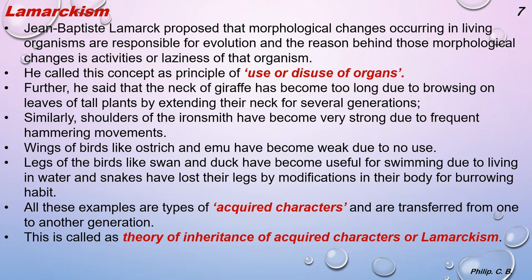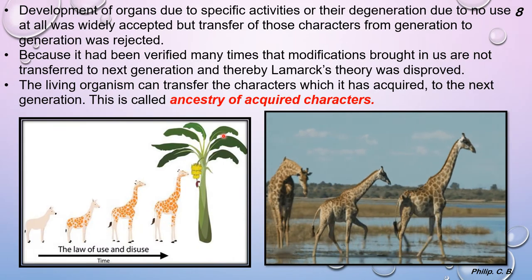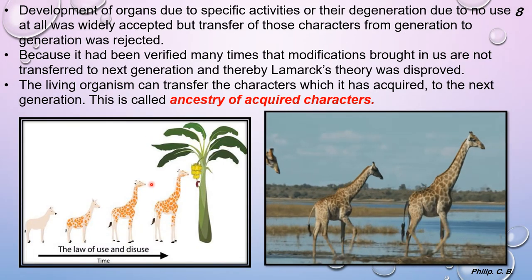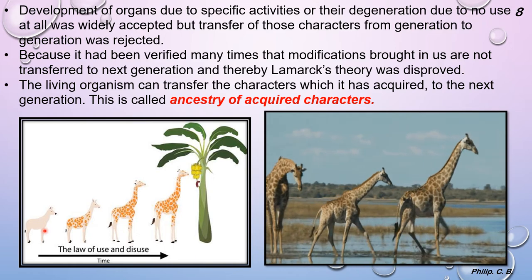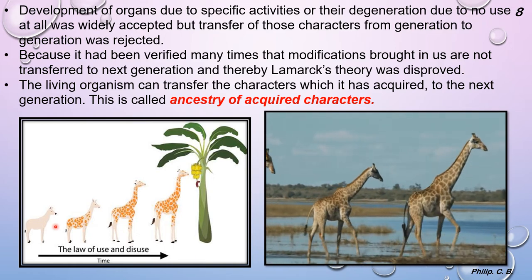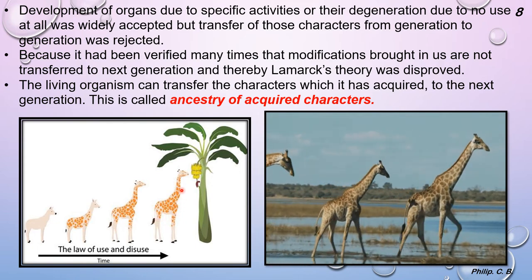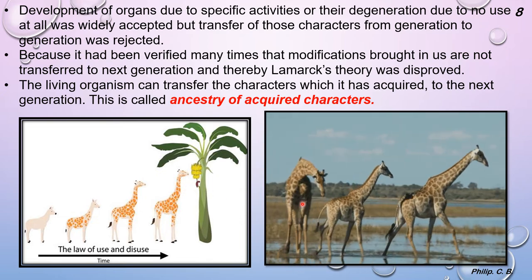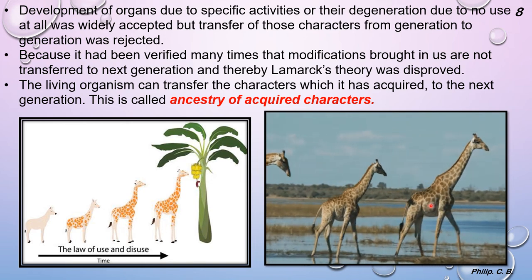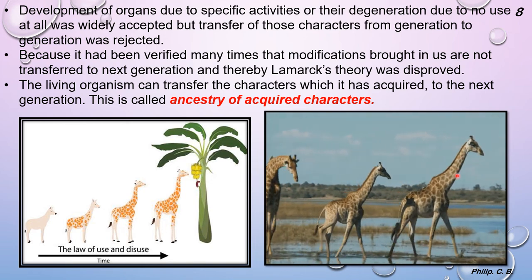This is called the theory of inheritance of acquired characters, or Lamarckism. 'Inheritance' here means a character obtained during the lifetime that is inherited and passed on to the next generation — from grandparents to parents to offspring. The image of the giraffe shows earlier small giraffe progressing to the long-necked present-day giraffe as food availability was in tall trees.